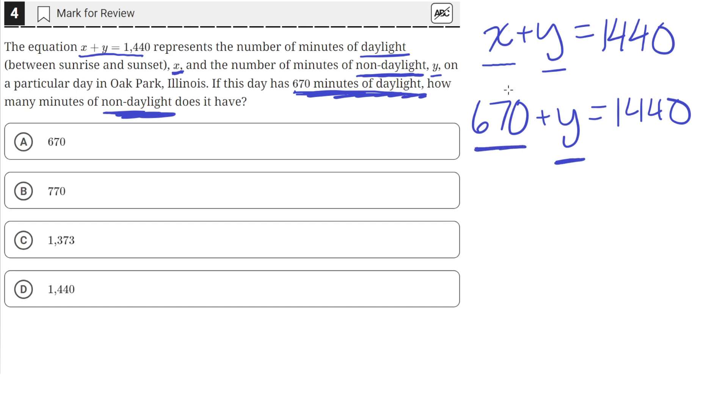So to solve for y, we just need to isolate y, and we can do that by subtracting 670 from both sides. So these 670s will cancel out, so we'll be left with y equals 1,440 minus 670, which is just equal to 770, which is answer choice B.